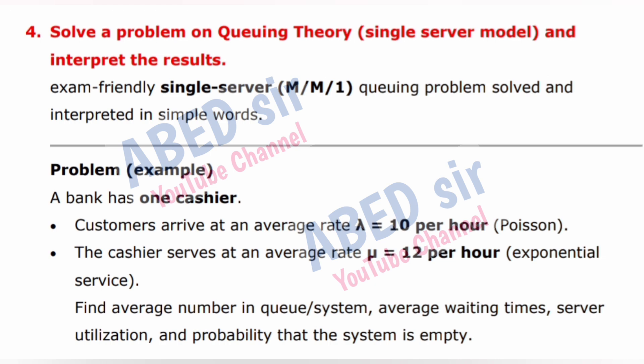Next important long question: Solve a problem on queuing theory — single server model — and interpret the results. Exam-friendly single server (M/M/1) queuing problem solved and interpreted in simple words. Problem example: A bank has one cashier. Customers arrive at an average rate λ = 10 per hour (Poisson). The cashier serves at an average rate μ = 12 per hour (exponential service). Find: average number in queue and system, average waiting times, server utilization, and probability that the system is empty.